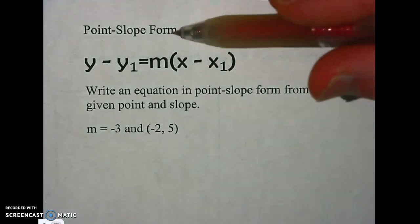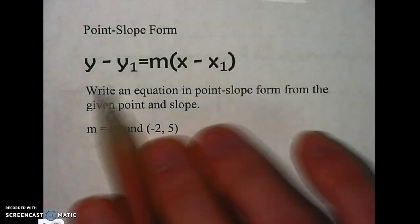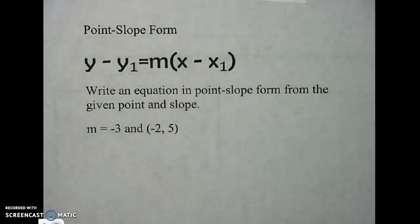There is a third equation for a line. It's called point slope form. This is what it looks like. It looks pretty crazy, but I'm going to show you how simple it really is.